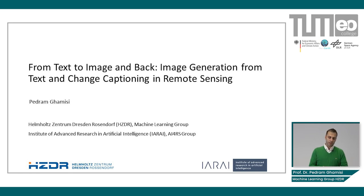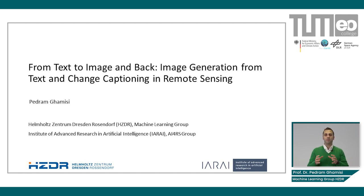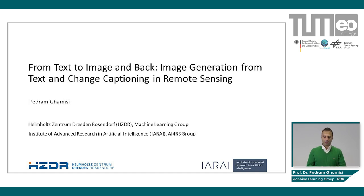Why did I choose this particular title? Because in this presentation, I'm going to provide you with two examples. In the first example, I'm going to generate realistic remote sensing images from text. And in the second example, I'm going to discuss change captioning, or producing text from images — and this is why I chose 'From Text to Image and Back.'